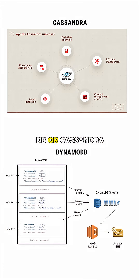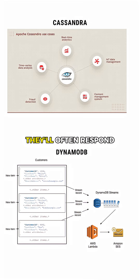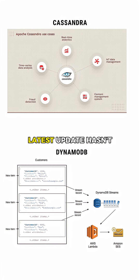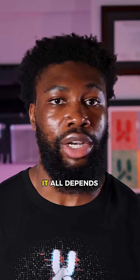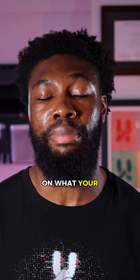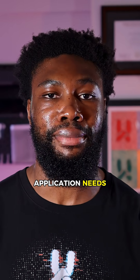NoSQL databases like DynamoDB or Cassandra favor availability. They'll often respond to your request even if the latest update hasn't reached every node yet. Neither approach is right or wrong — it all depends on what your application needs.